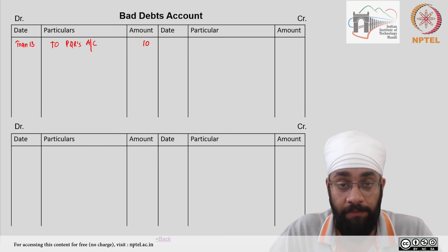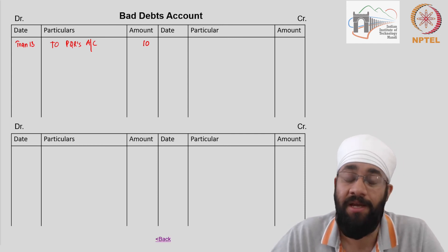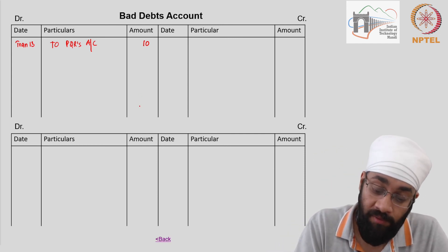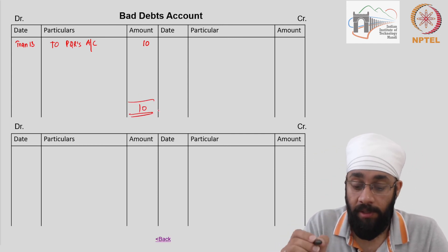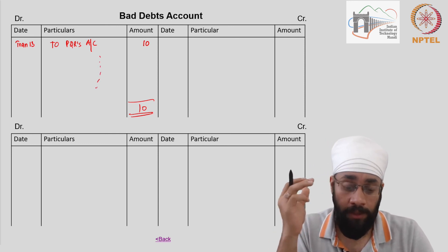Bad debts - what is the amount of money lost because the customers decided not to pay you or they could not pay you? Well, 10. 10 is the amount. So you will have all bad debts listed here.